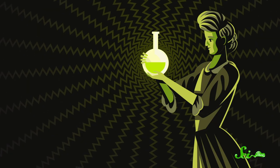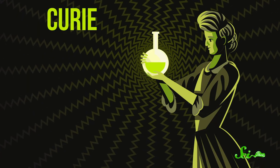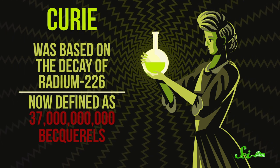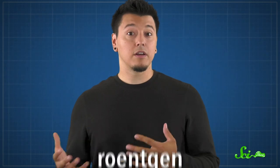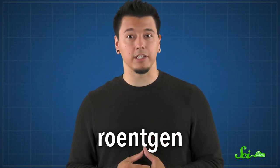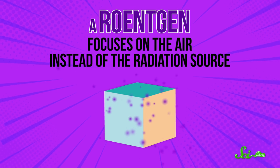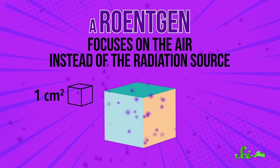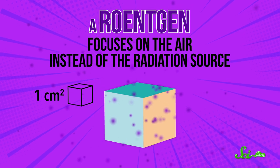There are older units that describe decay rates too. The curie, for example, was based on the decay of radium-226, but it's now defined as 37 billion becquerels. Somewhat related is the röntgen, which was in fashion for a while and recently popularized by the Chernobyl miniseries on HBO. It focuses on the air instead of the radiation source — essentially, it quantifies how many electrons are being knocked off per cubic centimeter of air. And if you're standing next to something emitting one curie of radiation, or in a room where a whole lot of electrons are being knocked off of air molecules, that's probably not great for you.